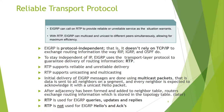EIGRP can provide 100-level services as the situation warrants. EIGRP can multicast and unicast to different neighbors simultaneously, allowing for measured efficiency. EIGRP is protocol independent and does not rely on IP to exchange routing information. EIGRP uses a transport layer protocol called RTP to guarantee delivery. RTP supports unicasting and multicasting. Initial EIGRP messages are sent using multicast packets sent to all neighbors, and when every neighbor is expected to reply, it uses a unicast hello package.